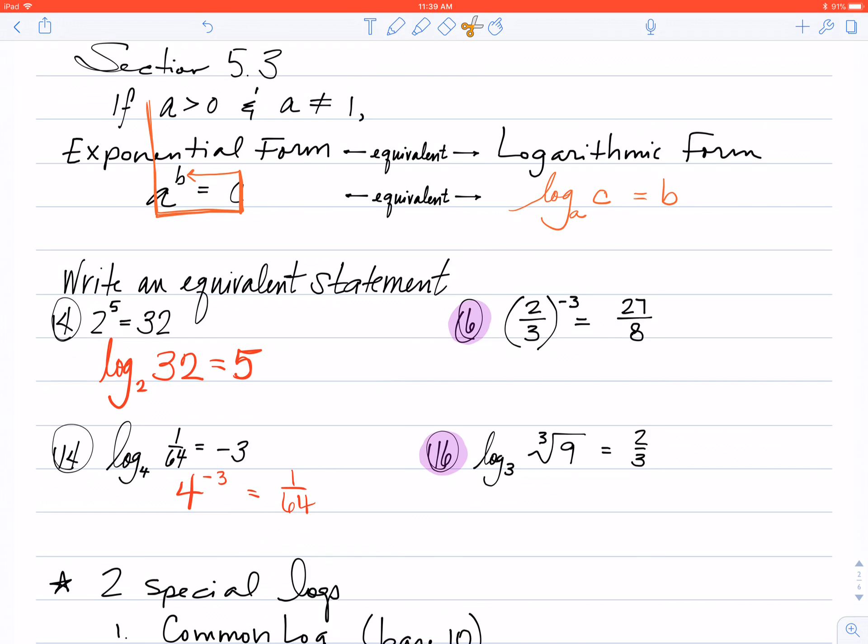Now just a note when you're writing this: the log, the c, and the b - all of these things are written in the same size font on the same line. The only thing that's written any differently is the a, which is written down a little bit lower than the rest of it.